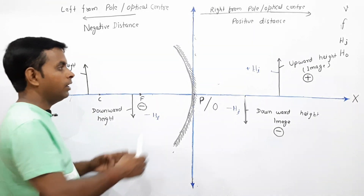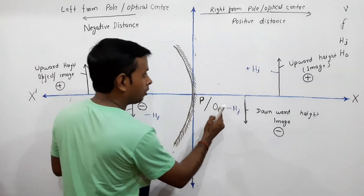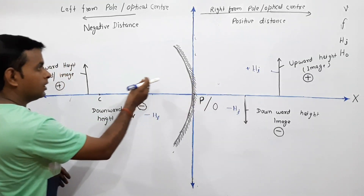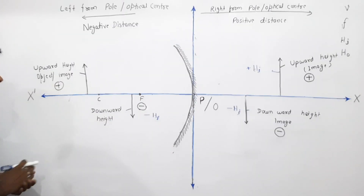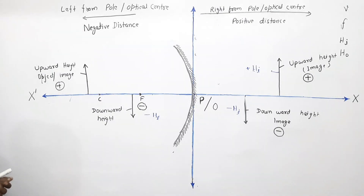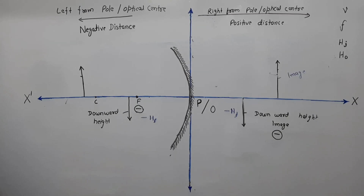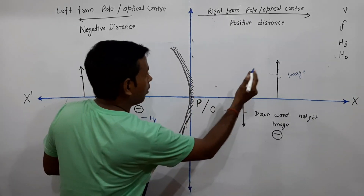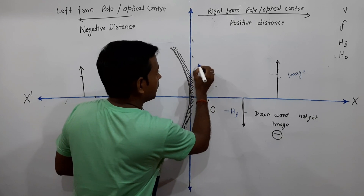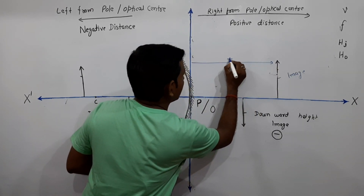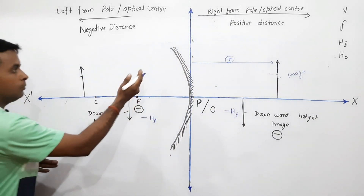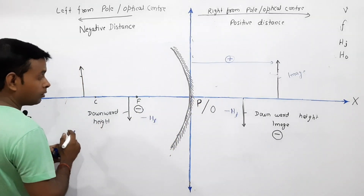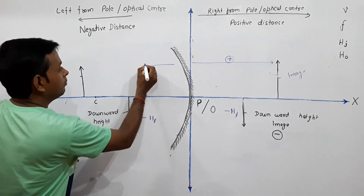When any image is formed to the right of the pole or optical center, the distance of the image is taken as positive. If the image is formed in front of the mirror or lens — meaning to the left of the pole or optical center — then it is taken as negative, for both mirrors and lenses alike.